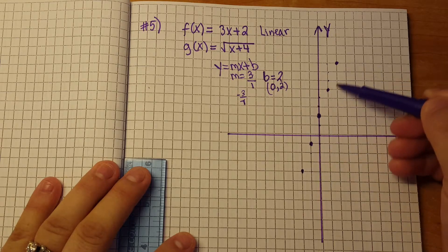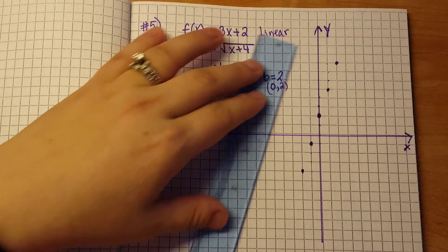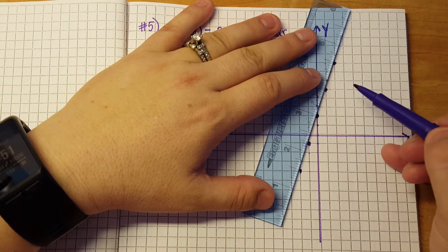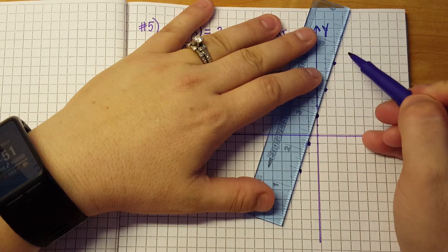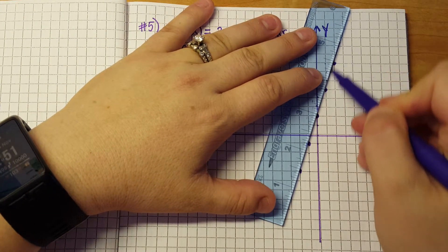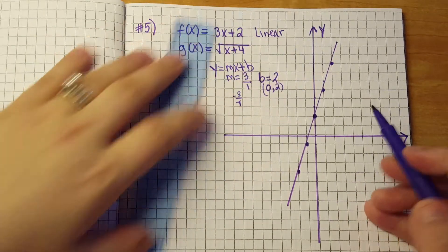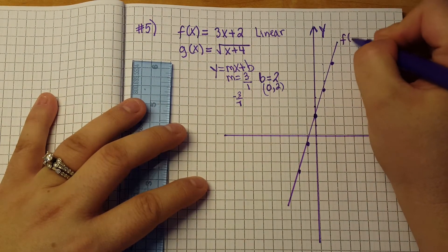Now we clearly have enough points to make our straight line for our linear equation so I'm going to go ahead and grab my straight edge over here and line it up. Make a straight line and this is our f of x.